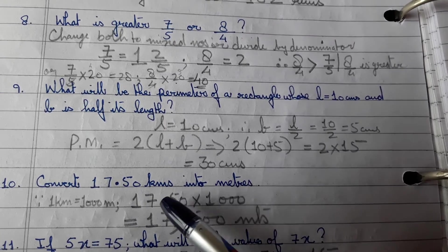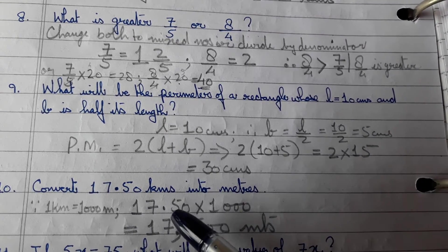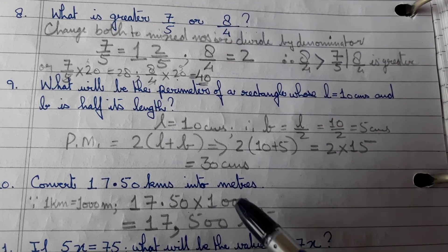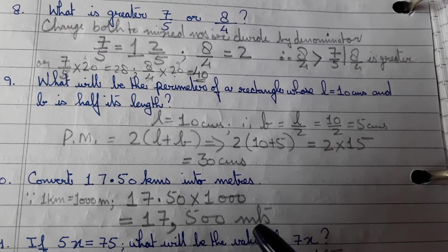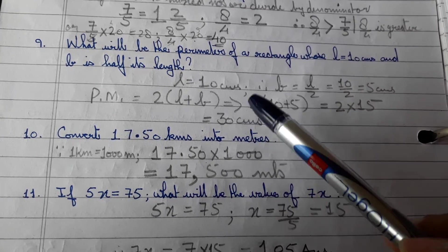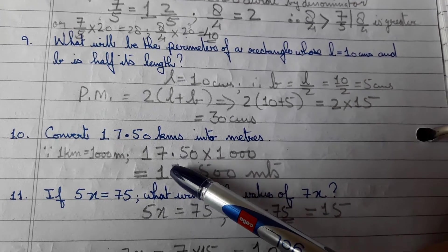Convert 17.50 kilometers into meters. So 17.50 into 1000 is 17,500 meters.